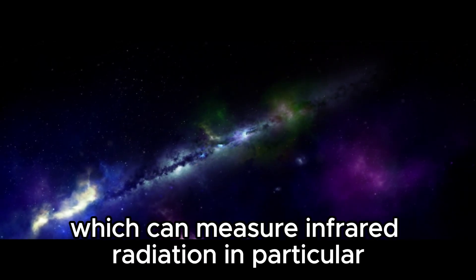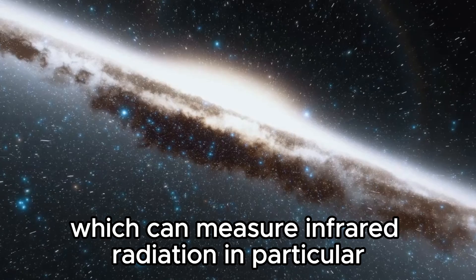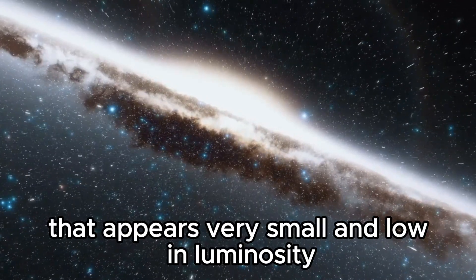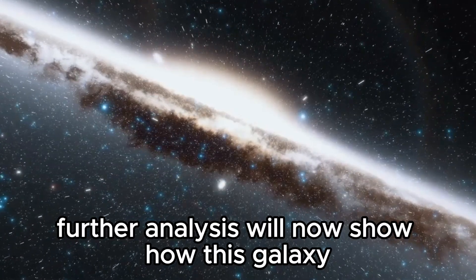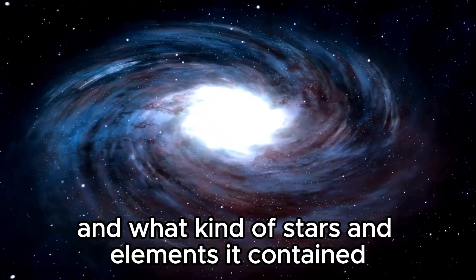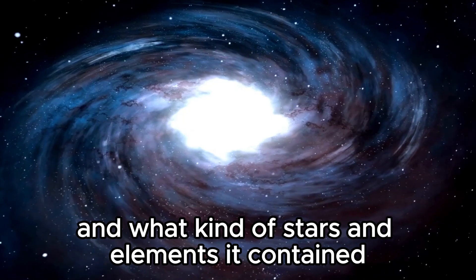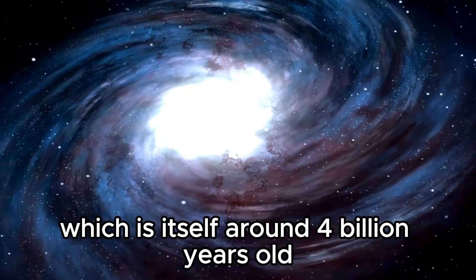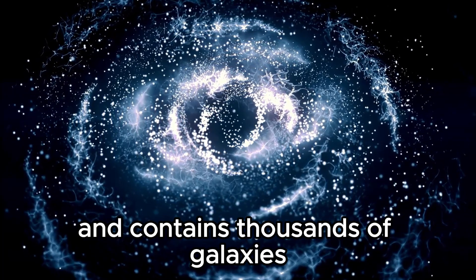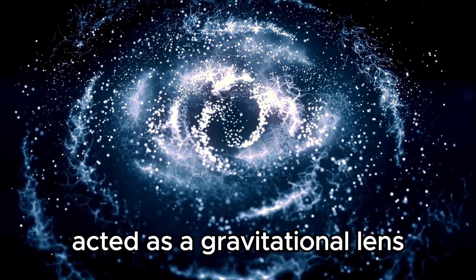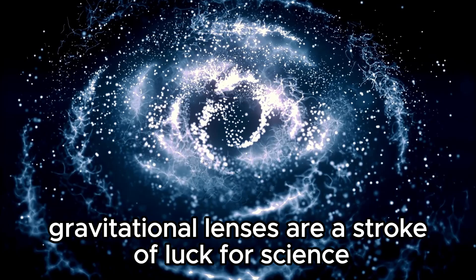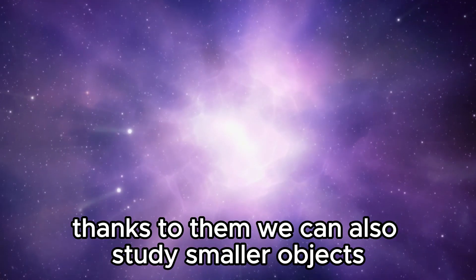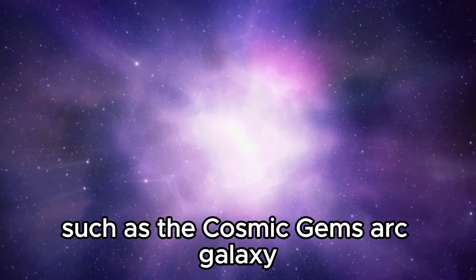The spectrometer, which can measure infrared radiation in particular, showed that the diffused light really is a separate galaxy that appears very small and low in luminosity. Further analyses will now show how this galaxy was structured and what kind of stars and elements it contained. The upstream galaxy cluster SPJ615574, which is itself around 4 billion years old and contains thousands of galaxies, acted as a gravitational lens. Gravitational lenses are a stroke of luck for science. Thanks to them, we can also study smaller objects such as the Cosmic Gems Arc galaxy.